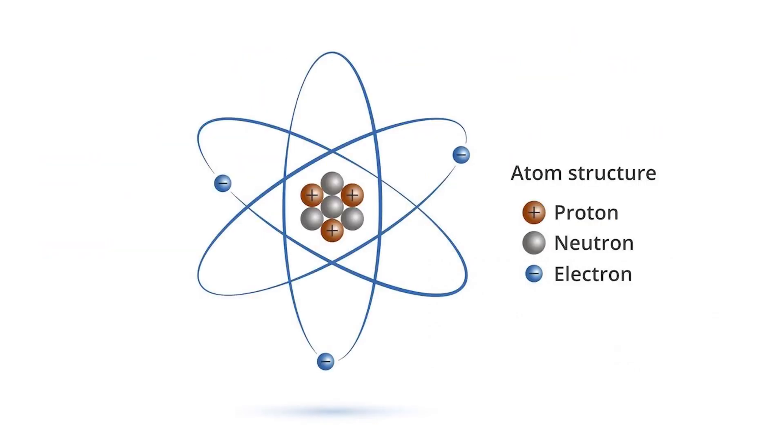Again, in order to produce our atom or elements, we must have these three subatomic particles, which are proton for positive charge, neutron for the neutral charge, and electron for the negative charge.